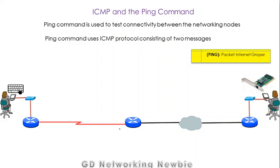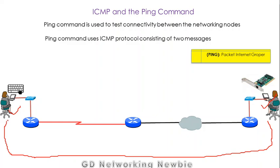For example, if this is a node and this node wants to check whether another node is connected or not, to check this connectivity status, this host can use the ping command. The ping command itself uses ICMP protocol, and this protocol for ping uses two messages: one message is an echo request and the second message is an echo reply. As a side note, ping stands for Packet Internet Groper.